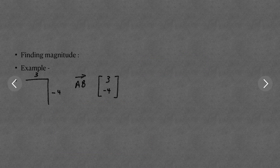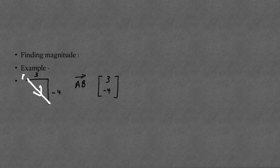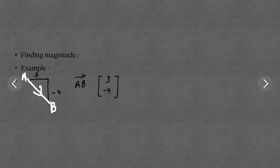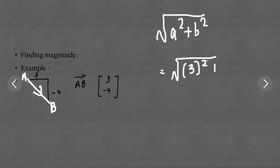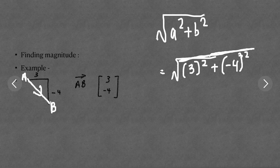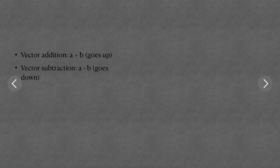For finding the magnitude, here we have vector AB equal to (3, -4). To find the magnitude we use the formula: square root of (a squared plus b squared). So that is the square root of (3 squared plus minus 4 squared), which equals the square root of (9 + 16) equals the square root of 25, giving a magnitude of 5.